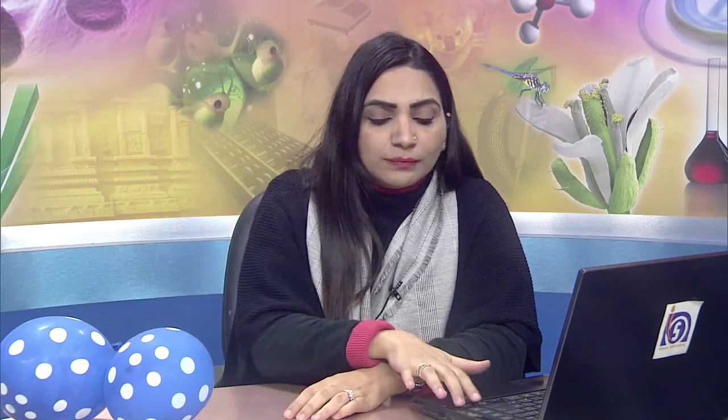Later on, these external objects get replaced with fingers, so you might have seen children counting on their fingers — one, two, three, four, and so on. And later on, with the development of abstract thinking, the child does not need concrete objects, neither external objects nor fingers. The child becomes capable of doing mental arithmetic. If asked what is 10 plus 10, you don't need objects to do the calculation — you can do that mentally because you have arrived at a level of development where you are capable of abstract processing of information.